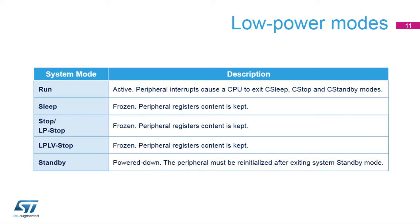Here is an overview of the peripheral status at specific low-power configuration modes. The Interprocessor Communication Controller is not able to change states in sleep and stop modes. In standby mode, the Interprocessor Communication Controller content is lost. The Interprocessor Communication Controller will be in run mode whenever a CPU is in run mode. The Interprocessor Communication Controller is able to interrupt and wake up a CPU in C-run, C-sleep, and C-stop modes.